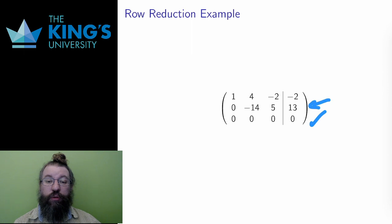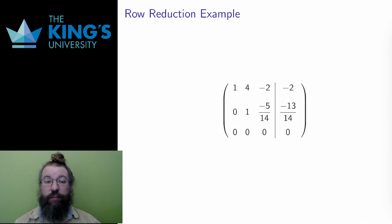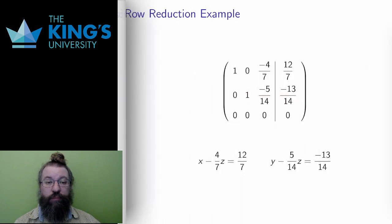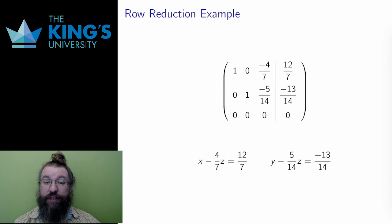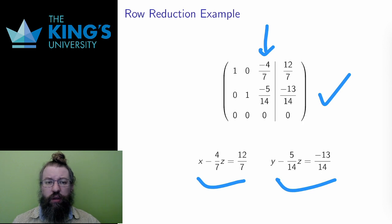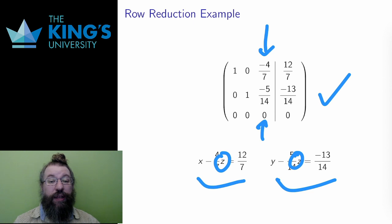Now I want a leading one in row two, so I divide row two by negative fourteen. There is a leading one. Now I want to clear the four above that leading one, so I subtract four times row two from row one. This is now in reduced row echelon form. I can't do anything more to the third column since there are no more leading ones to construct. Now I read off the solutions — but this is a bit tricky, since there are still variables. What is happening is that the column without a leading one, the z column, is going to represent a free variable, and there will be infinitely many solutions. I will leave the details of that interpretation to the next video.